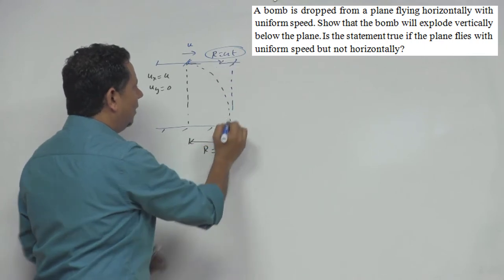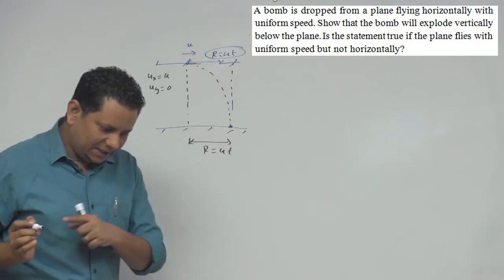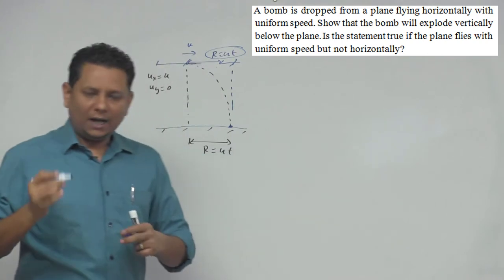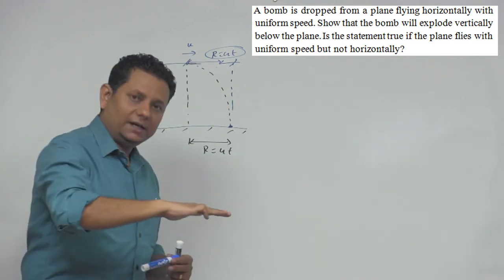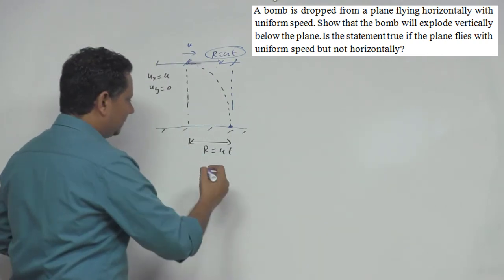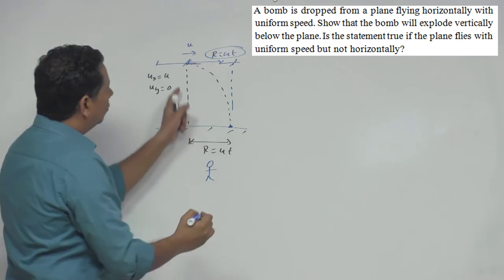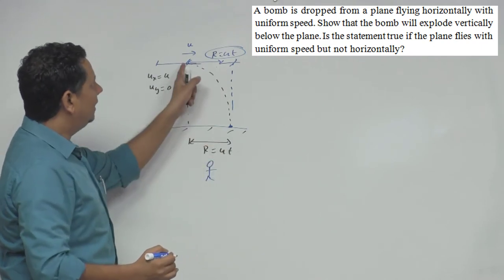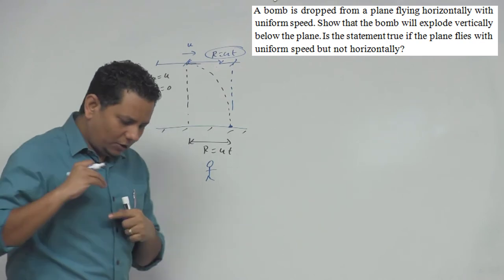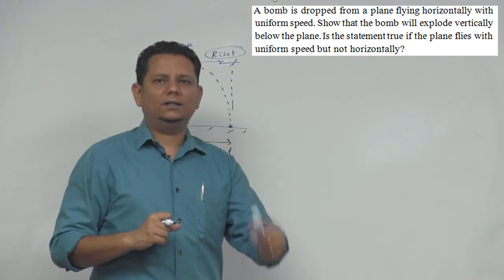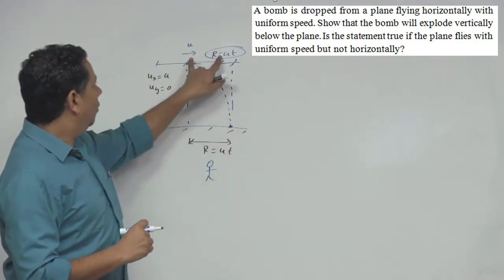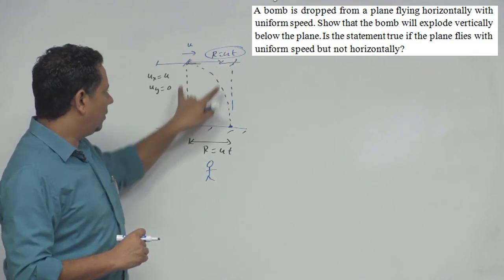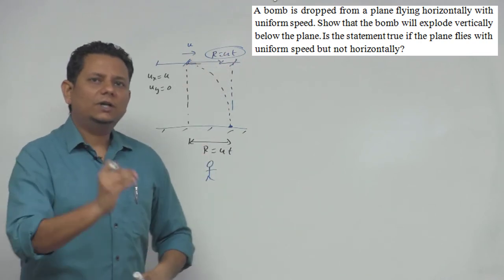So when this bomb or food packet falls here, at that time the aeroplane will be exactly above it. The pilot can see it like this. If we are standing on the ground watching, the motion appears projectile. But for the pilot, it will always be going in a straight line downward. At that time, the horizontal distance will be the same, so it will fall exactly below the aeroplane.